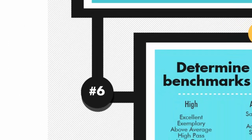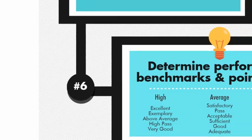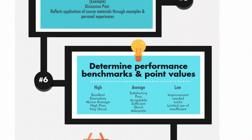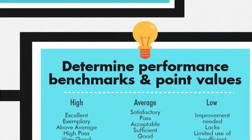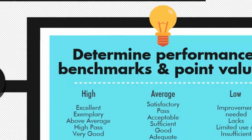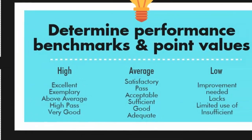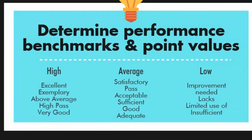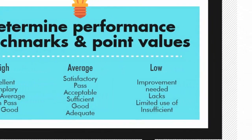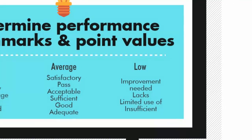Step 6: Determine performance benchmarks and point values. High-level benchmarks include terms such as Excellent, Exemplary, Above Average, High Pass, and Very Good. Mid-level benchmarks include Average, Satisfactory, Pass, Acceptable, Sufficient, Good, and Adequate. Low-level benchmarks include terms like Improvement Needed, Lax, Limited Use of, and Insufficient. Try not to be too negative with the low benchmarks.